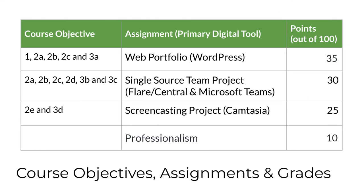This table lists the major assignment categories in the course along with the learning objectives they support and how each contributes to your course grade. You'll build a portfolio website that includes some blog posts as well as other content using WordPress. You'll collaborate with others and write modular content, publishing it using single source principles with MadCap Flare and Central. You'll produce a quick start guide as a screencast with Camtasia. You'll also complete several additional activities that support those major project assignments. Details about every assignment, including grading criteria, are on Canvas.